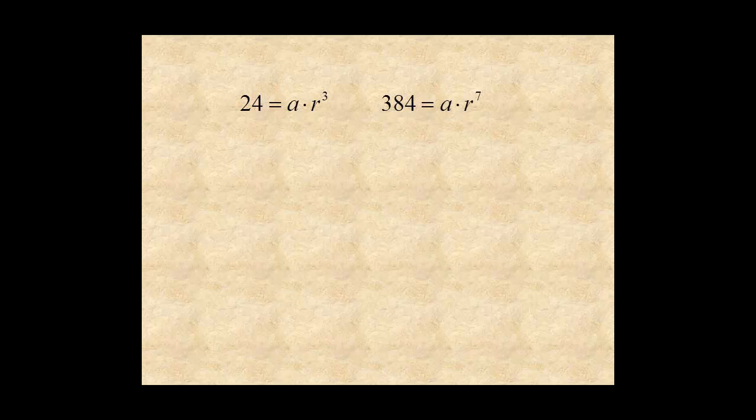Next, solve the first equation for a and substitute into the second equation. Then simplify r to the power of 7 over r to the power of 3 for r to the power of 4.